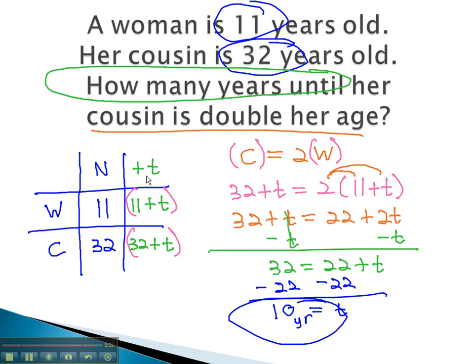By using plus t for our change in time when we don't know it, we can quickly find this unknown time.